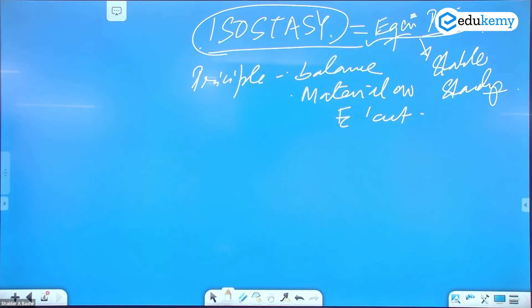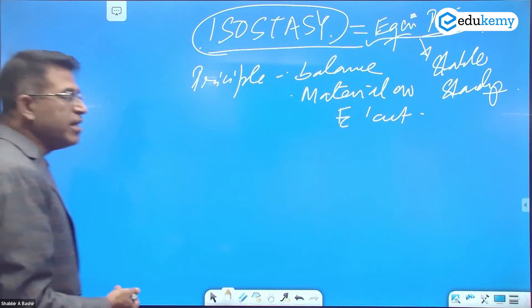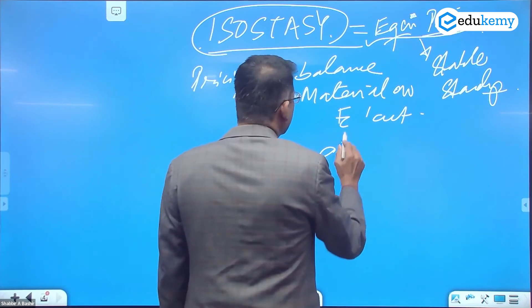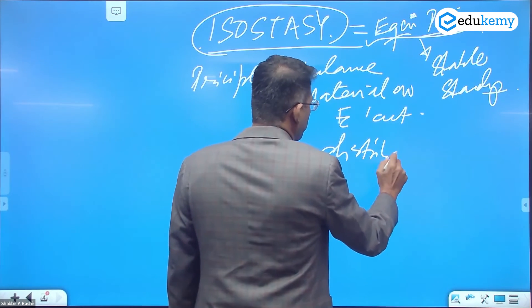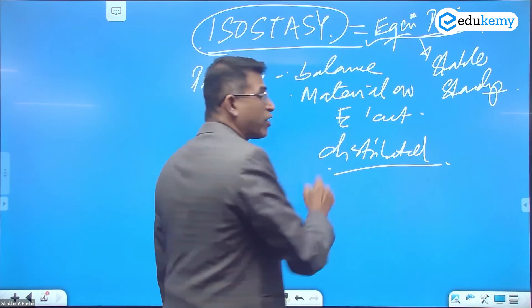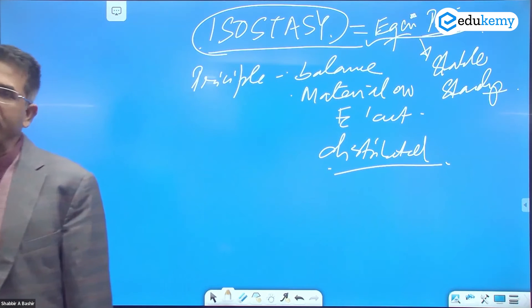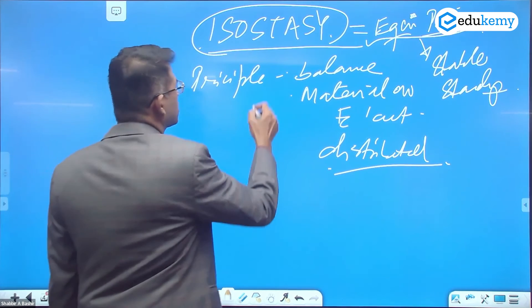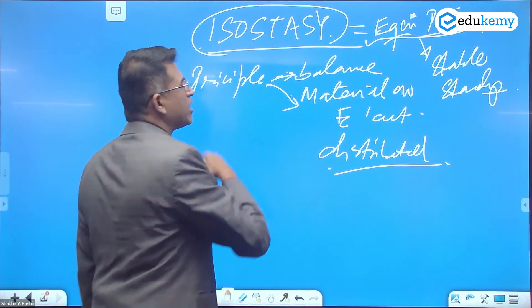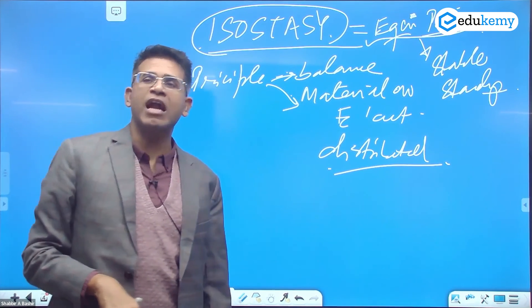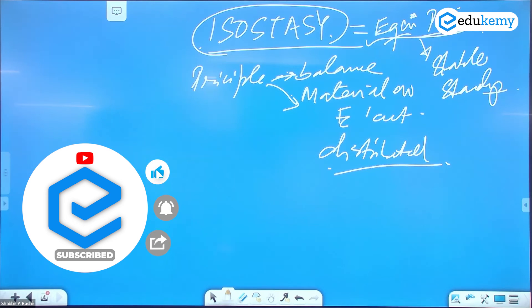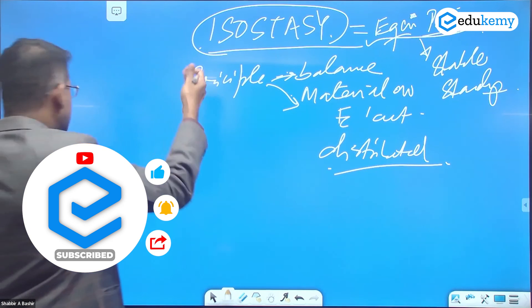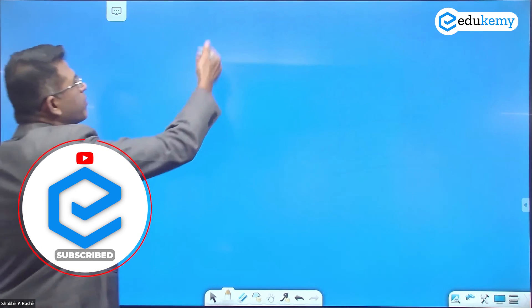Why do we have mafic rocks at the oceans? Why do we have felsic rocks at the continents? How does this distribution happen? So isostasy explains these two aspects: the balance of the landforms and the material distribution.